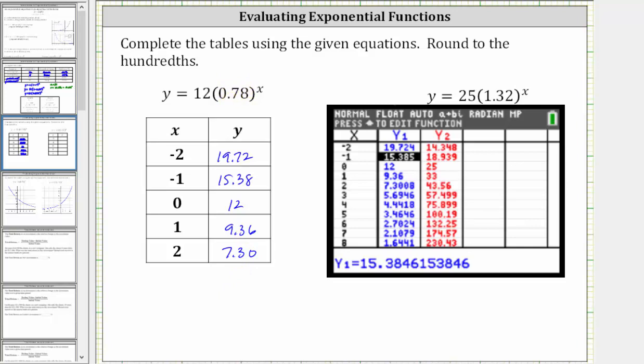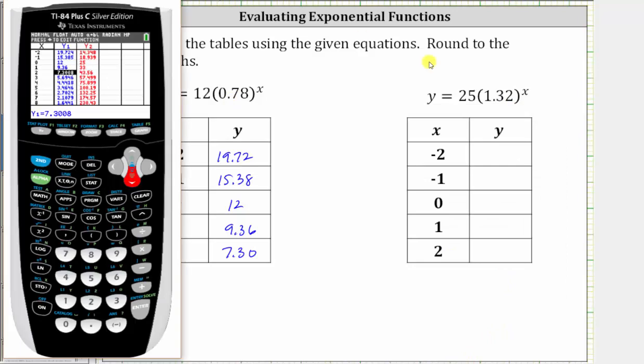And now let's record the y values for the second equation. Remember, these y values are in y two. So let's press the right arrow and go back up to x equals negative two, which is here.